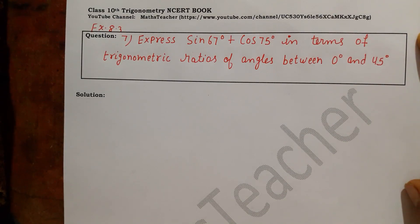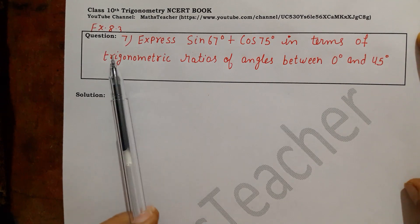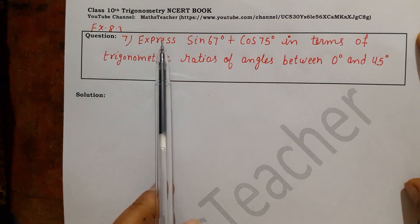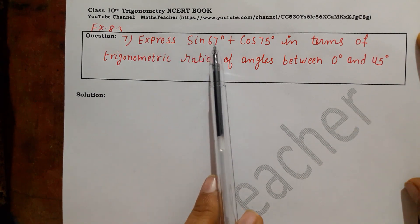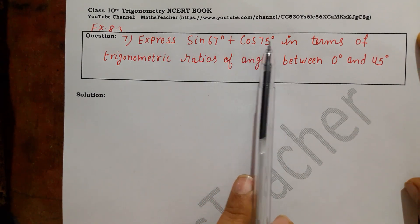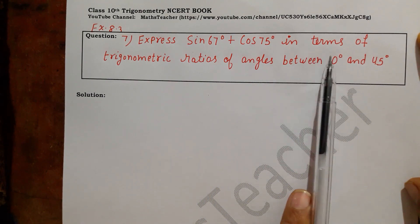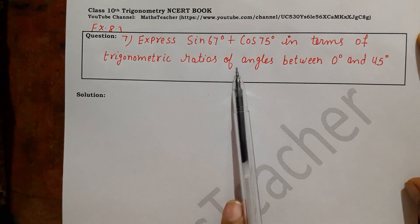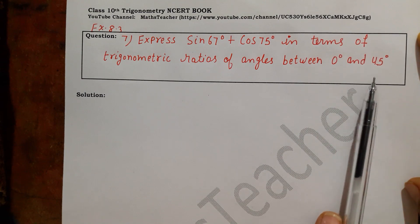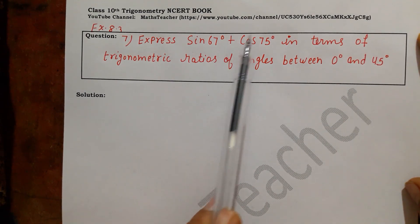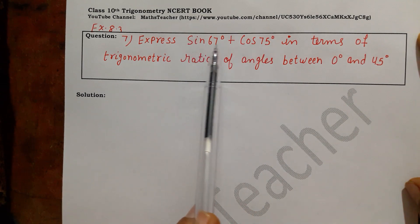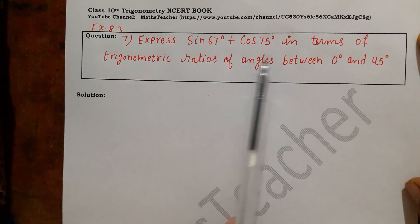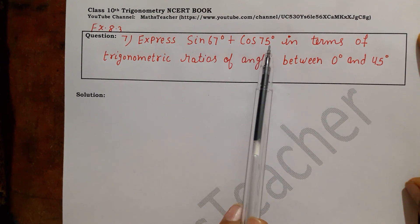Hello viewers, I am Rashmi, your maths teacher. Today we are solving question number 7 from exercise 8.3. The question is: express sin 67° plus cos 75° in terms of trigonometric ratios of angles between 0° and 45°. The question means that the angles given — 67° and 75° — are above 45°.